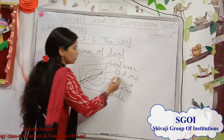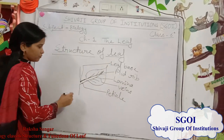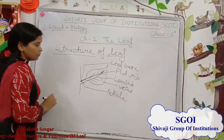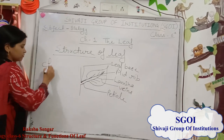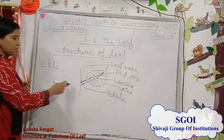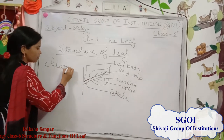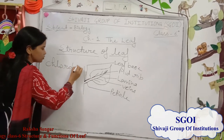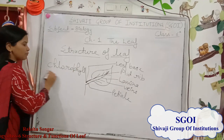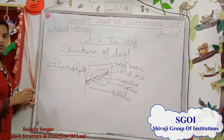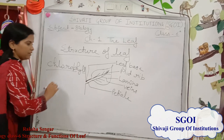The mid vein is called the midrib, and the side veins are called side veins. This is the structure of a leaf. Leaves generally appear green in color. Why? Because of the presence of chlorophyll. Chlorophyll is the green color pigment due to which the color of the leaf is green.